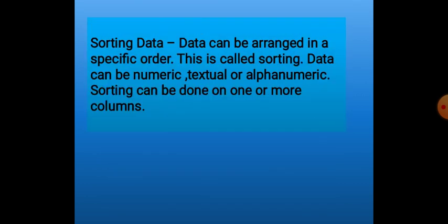In Excel, now we will understand two advanced features: sorting and filtering. First we will discuss about sorting data. What is the importance of sorting? Sorting means arranging the data in a specific order. Normally we can arrange in alphabetical order, ascending or descending order, and sorting is possible on numbers, text, and alphanumeric data.